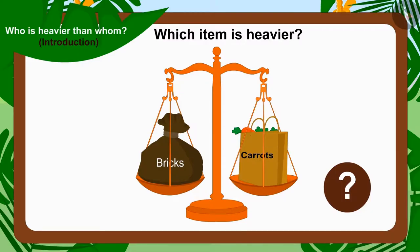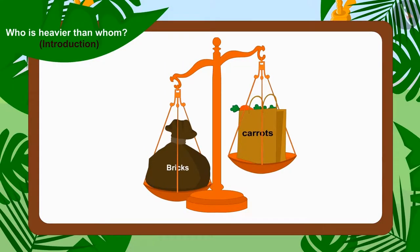Your answer is absolutely correct. This time the scale tips towards the sack filled with Shere Khan's bricks. So, the sack with Shere Khan's bricks is a lot heavier than Bunny's bag filled with carrots.